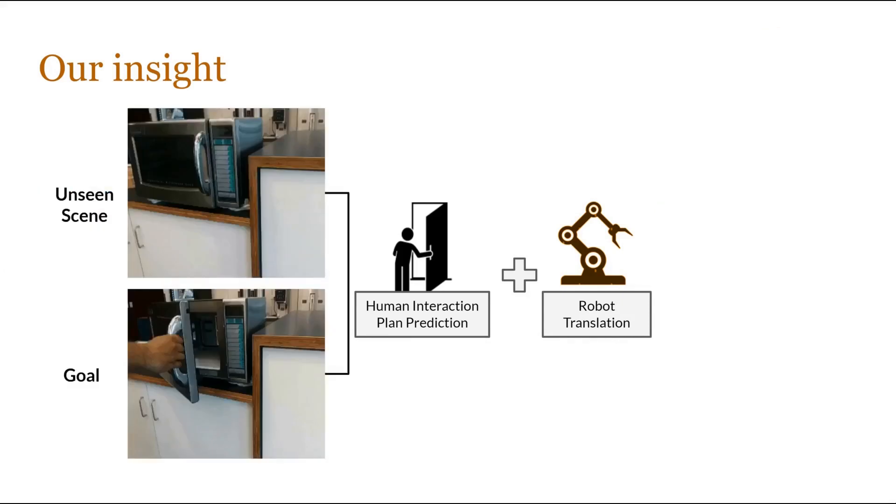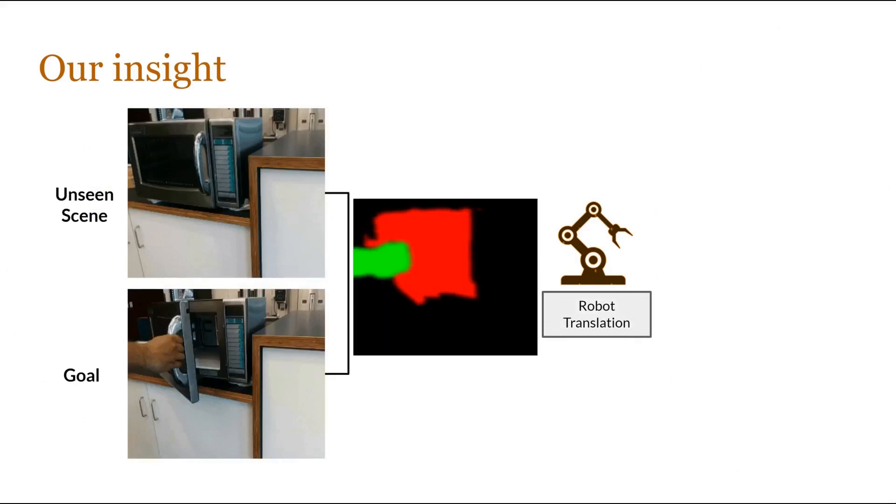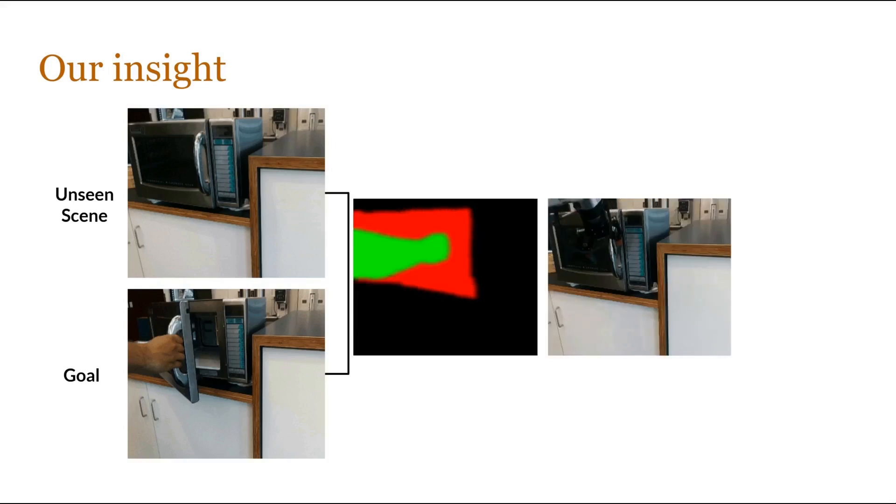So, given an unseen scene with a goal image, we first obtain a plan of how a human hand would interact with the object in the scene, followed by translation of the plan into robot actions for execution in the physical world.